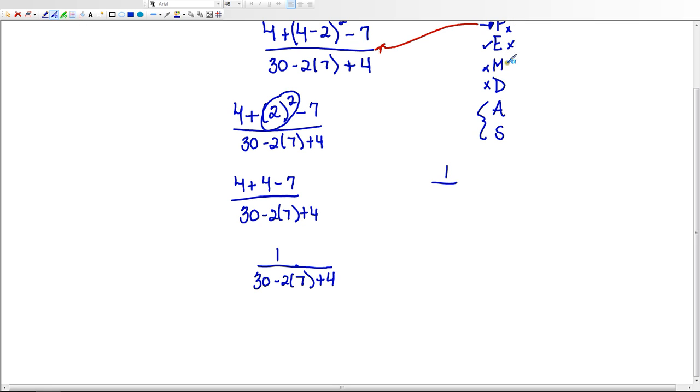So now it's multiplication or division. I do have multiplication here, so I'm going to bring down the 30 and the minus sign, and 2 times 7 is 14. And I'm going to bring down the rest.